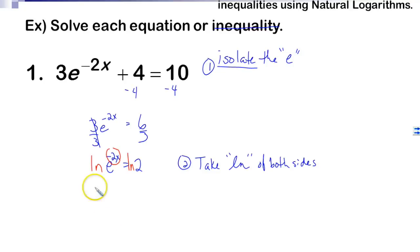It's going to come down in front. It's going to give me negative 2x ln of e equals ln of 2. Now what happens is ln of e, look, ln is log base e, right? ln of e is log base e of e, and there's a property that says if my base and my inside of my logarithm are equal, then this is going to be one.